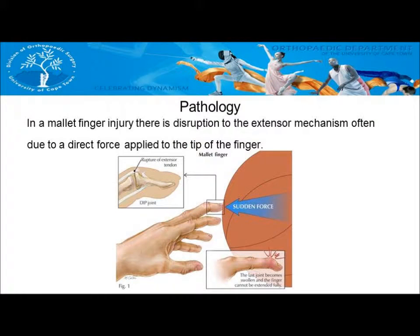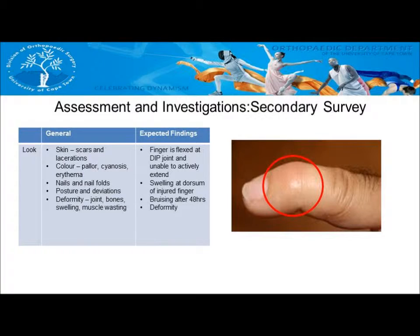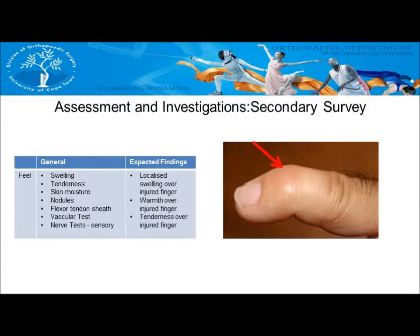In a mallet finger injury, there is disruption to the extensor mechanism, often due to a direct force applied to the tip of the finger. While looking at the injured finger, you will see it is flexed at the DIP joint, with swelling at the dorsum. Bruising will usually occur after 48 hours and a deformity will be present. On feeling, you will notice localized swelling, warmth, and tenderness over the injured finger.